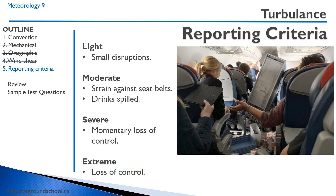We can report turbulence as light, moderate, severe, or extreme. Light turbulence is just small disruptions — you feel like you're being jostled around. It's quite common, and it's considerably rare to get moderate turbulence. Moderate turbulence is when you start feeling a strain against the seatbelt and drinks are spilled. A lot of people mistake light turbulence for moderate, but if you're not being pulled against the seatbelt and drinks aren't being spilled, it's still light turbulence, even if it feels pretty strong.